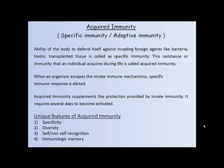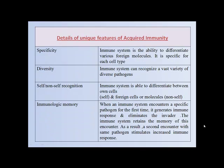This resistance or immunity that an individual acquires during their lifetime is called acquired immunity. When an organism escapes the innate immune mechanisms, a specific immune response is elicited. Acquired immunity supplements the protection provided by innate immunity. It requires several days to become activated. Unique features of acquired immunity are specificity, diversity, self/non-self recognition, and immunologic memory.